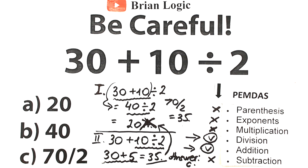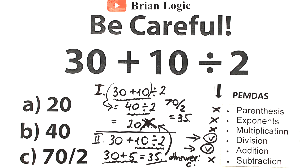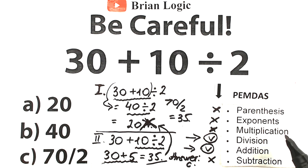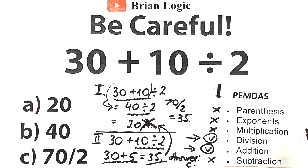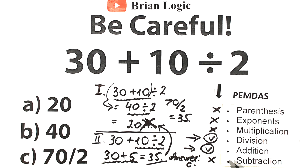Here are my final thoughts: division always comes before addition. It's a very big mistake to add first and then divide. Multiplication and division as a group always come before the addition and subtraction group. Addition and subtraction is the final step — you add or subtract last. Before that step, you multiply or divide. And before that, if you have exponents or parentheses, you solve those first. Parentheses have the highest priority, then exponents, then multiplication and division, then addition and subtraction. That's how we got 35.